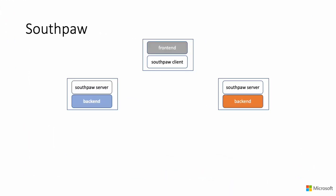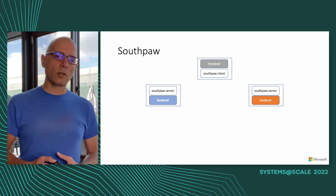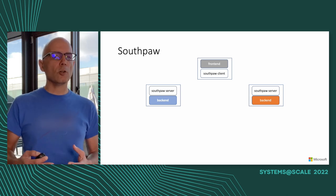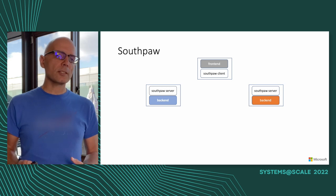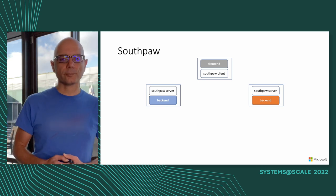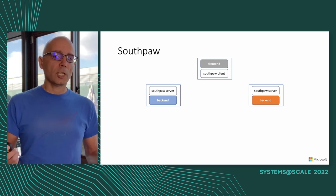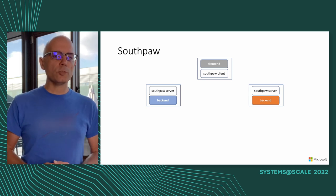To solve our load balancing problem, we started building Southpaw. Southpaw works as a sidecar, meaning it runs alongside the main container — a pattern you may have seen in service meshes such as Istio or Linkerd. This allows us to easily inject it into pods and service it independently from the main container, which also means we can completely avoid using shared libraries.